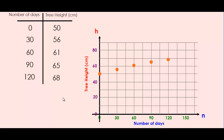Looking at the results, we can see that these dots all form a pattern that looks very close to a line. If we notice this, we could call this a linear relationship. We can add to this graph a line of best fit. A line of best fit is a line that connects the dots the best — it doesn't necessarily have to go through all the dots, but it should be as close to all of them as possible.